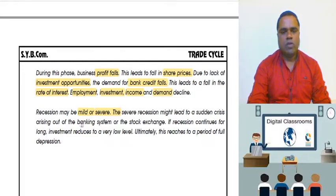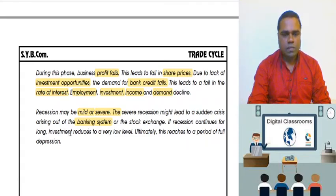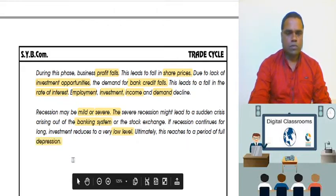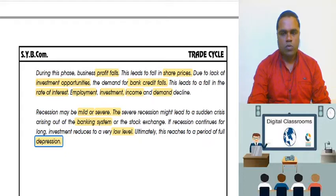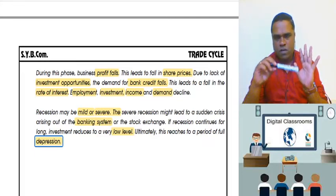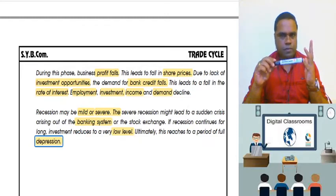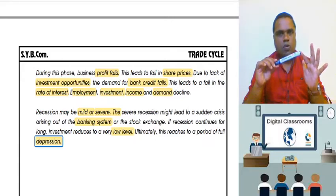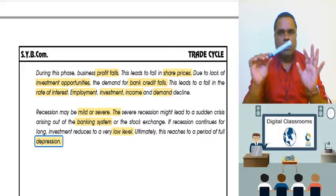If there is a sudden crisis where the banking system faces problems, stock exchanges collapse, and recession continues, the investment level will fall and the country will enter into depression. So children, as you noticed, I am going to tell you a small trick on how to remember this answer. Four words: we start with prosperity, prosperity reaches peak, then recession. If the recession stops, it comes into depression, and then recovery.